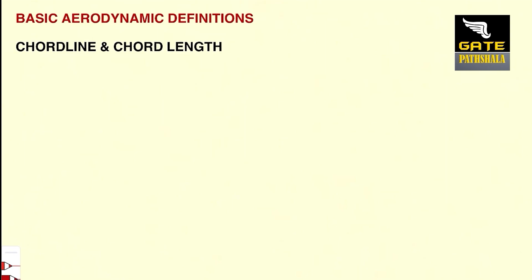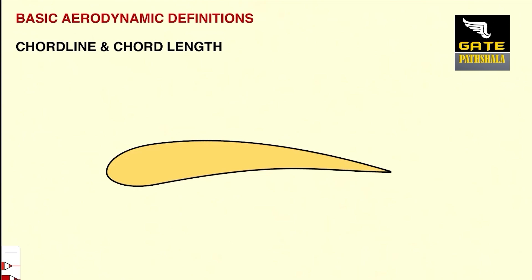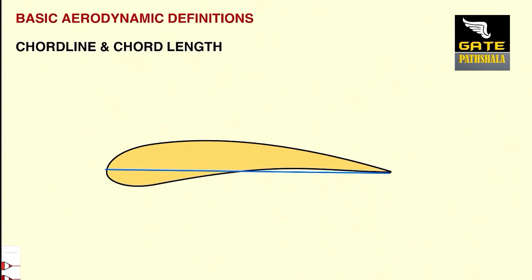To do that, let us consider an airfoil like this. Normally, people think chord line is just a line joining the leading edge and trailing edge. If this is the chord line, which may be true or may not be. This line also joins the leading edge and trailing edge. So, whether line 1 or line 2, which one is the chord line? This brings a huge confusion for a student to understand precisely which one is the chord line.